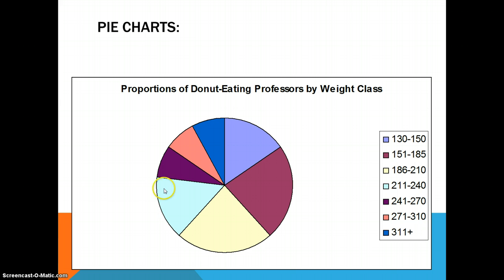Or we can actually do proportion, make a pie graph, which is kind of funny when you consider we're talking about eating donuts. But we can make a pie graph and show the proportion of people by their weight class.